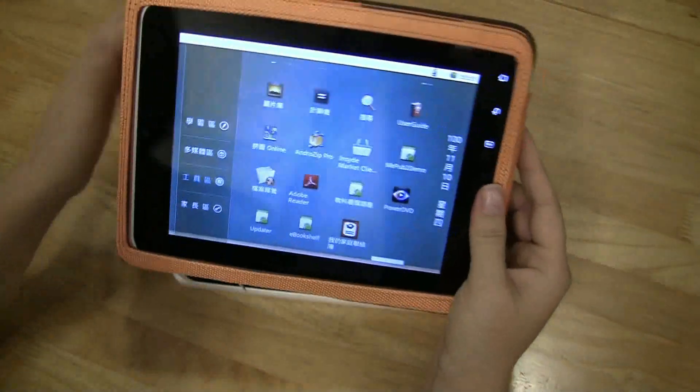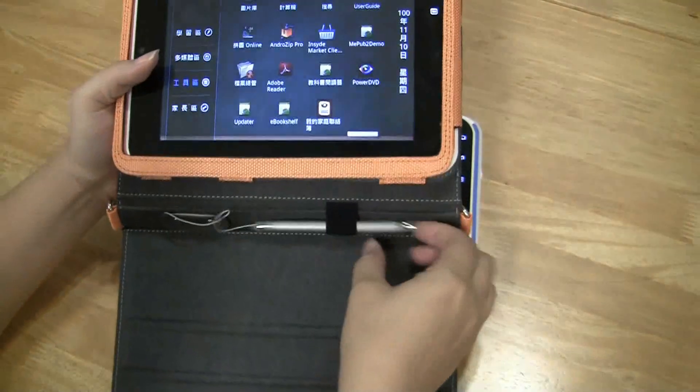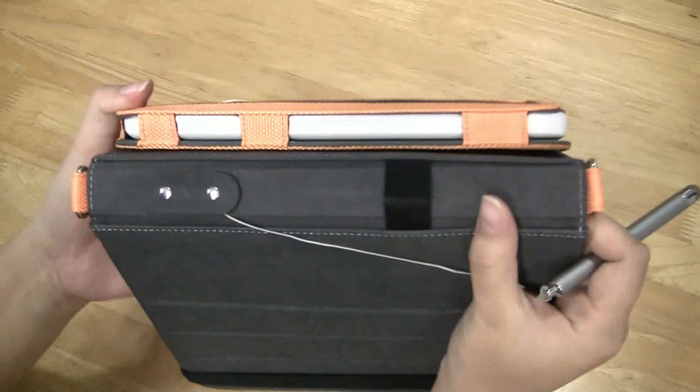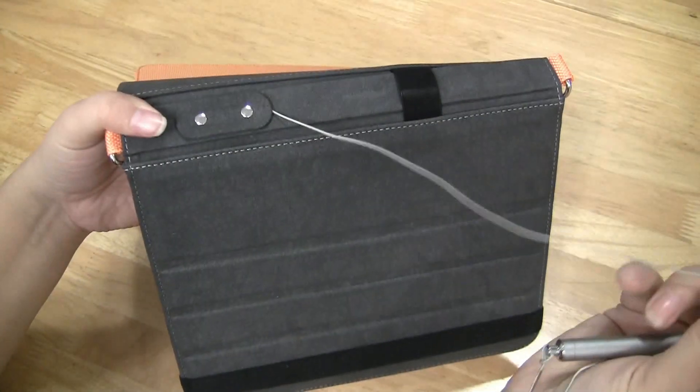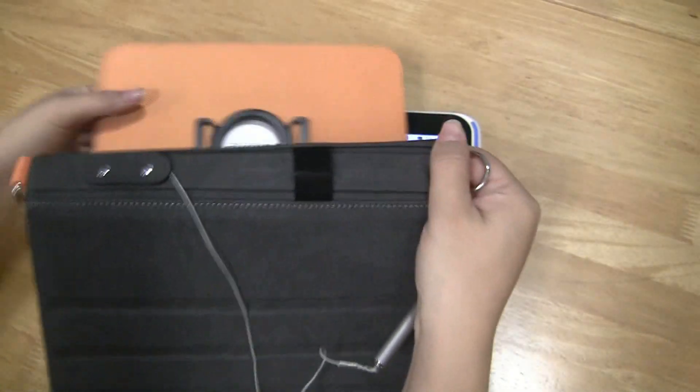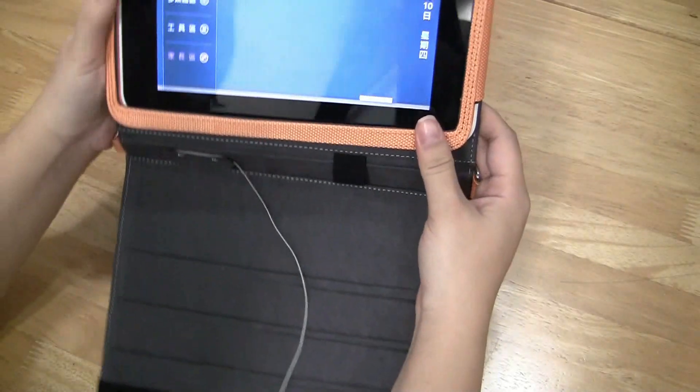You can actually see this comes with a ruggedized case. The question of the day—oh, and it is capacitive touch, and it actually also does have a pen here. If you see there, the pen actually—it's got a little—you can take it apart and move it around.